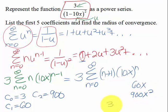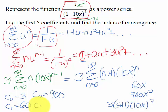So if we do our next term, we're going to have 3 times 3 plus 1 times 10x to the 3rd. So that's going to be 12 with 3 zeros. So our next coefficient is 12,000.